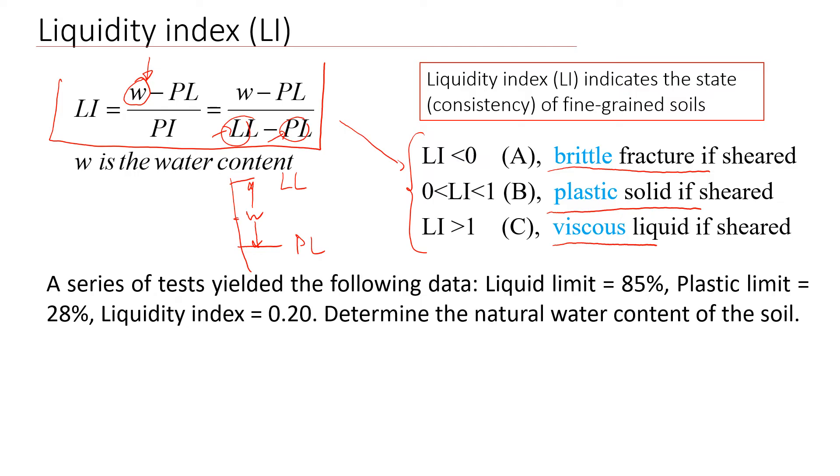But I would like to have a slightly different example, just to have a little bit more fun. So in this case, we are already given data of liquid limit of the soil, it's very high 85%, and plastic limit is 28%. And we're also already given the liquidity index, which is 0.2. So we kind of need to work it backward and estimate the natural water content of the soil, so w.